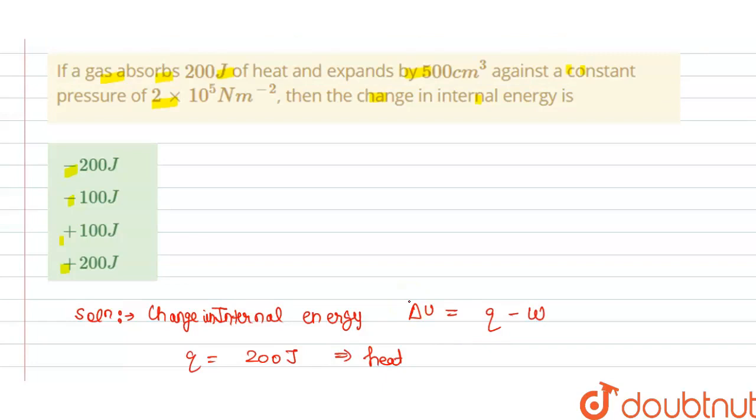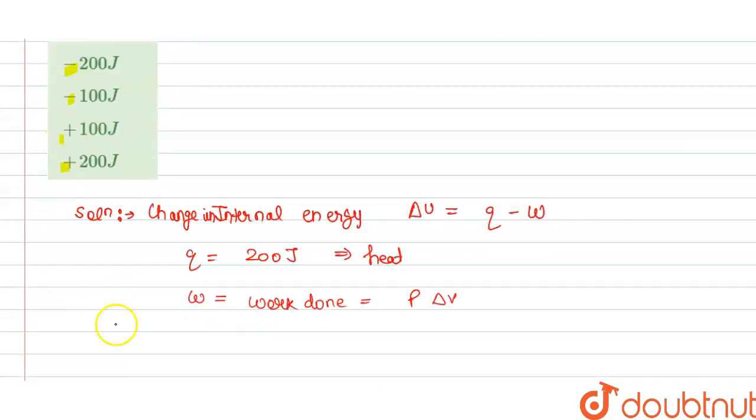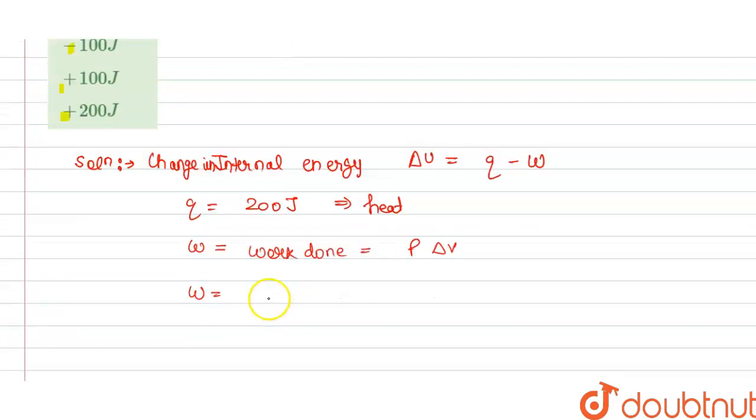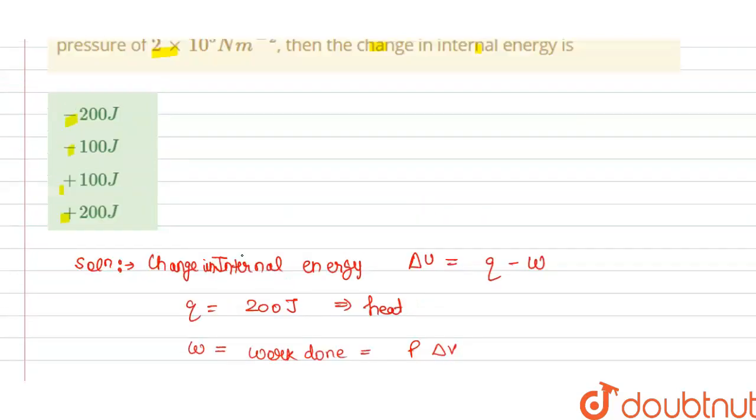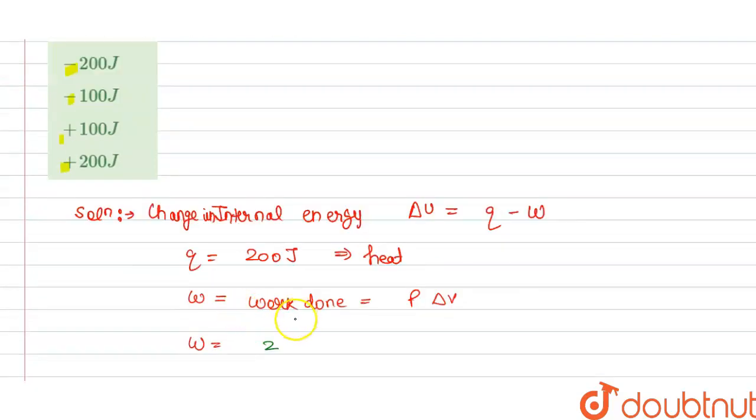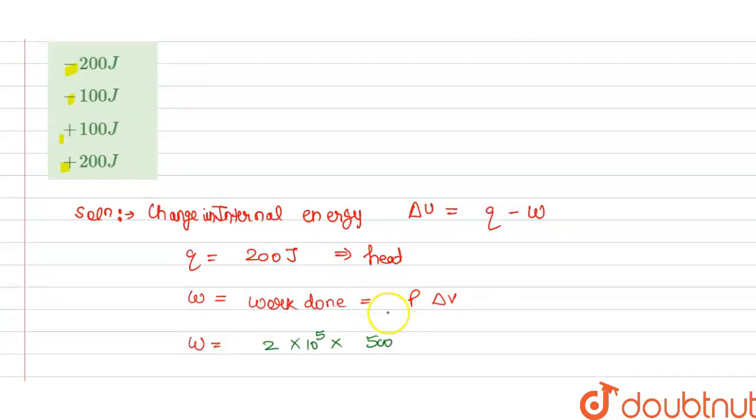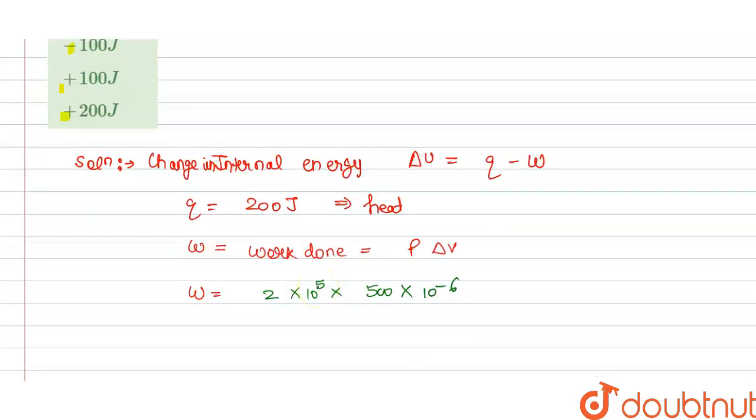So pressure is given to us. W is equals to pressure, 2 into 10 power 5 newton meter per meter square. And change in volume is 500, this is in centimeter cube, so in meter cube it is multiplied by 10 power minus 6.